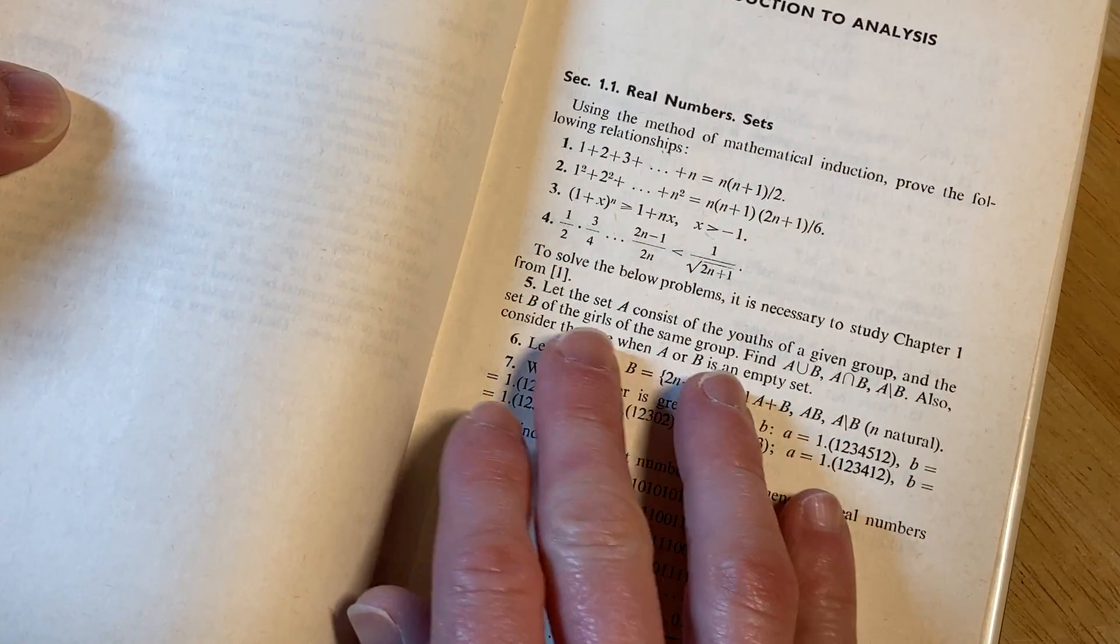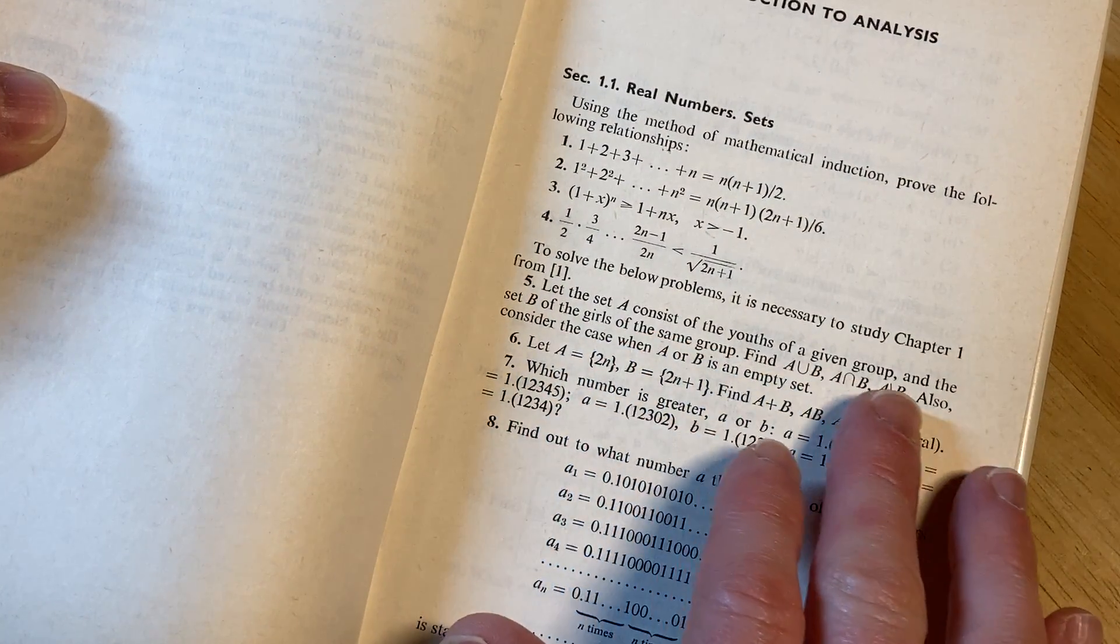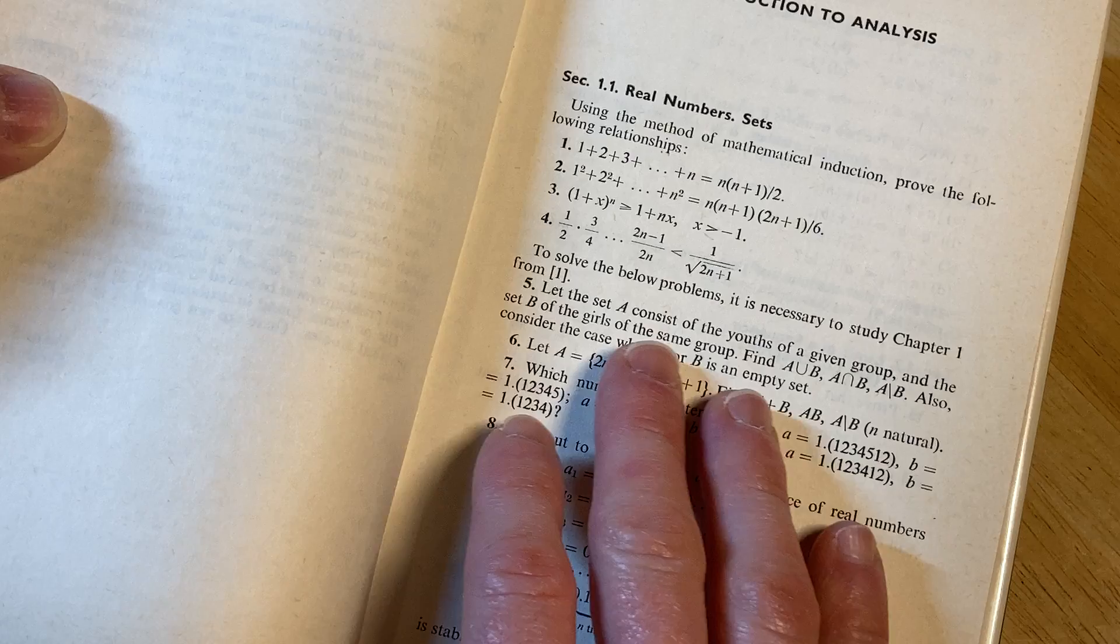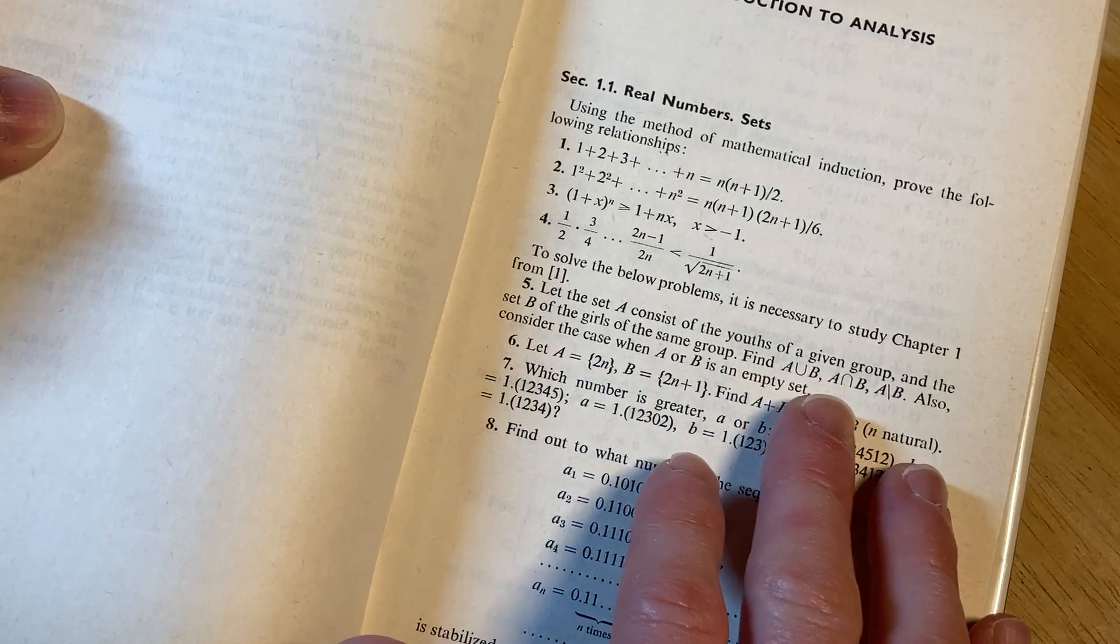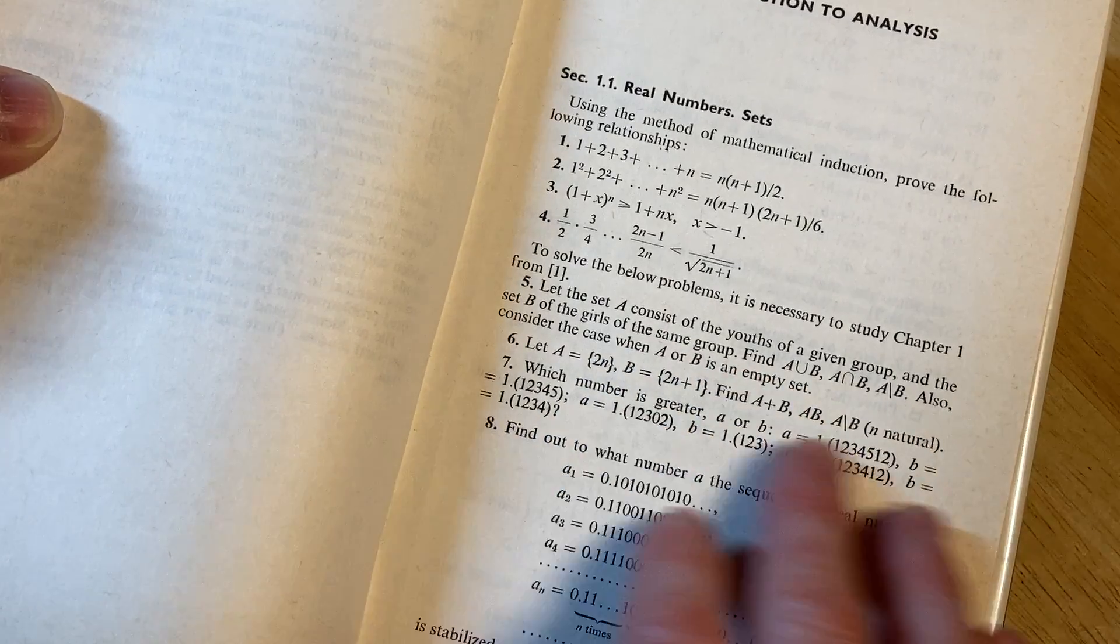That says here, let the set A consist of the youths of a given group and the set B of the girls of the same group. Find A union B, A intersect B, et cetera. Interesting.